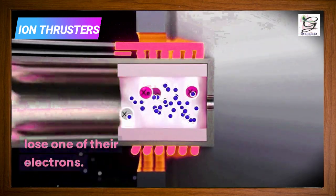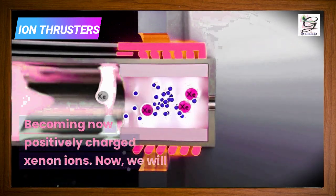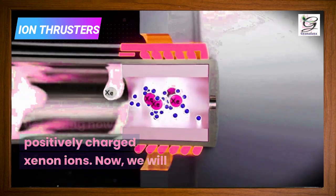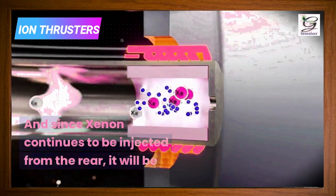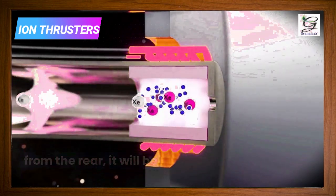This causes them to lose one of their electrons, becoming now positively charged xenon ions. Now we will have a plasma volume composed mostly of electrons, and since xenon continues to be injected from the rear, it will be forced out through the hole.